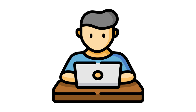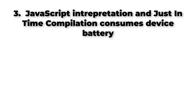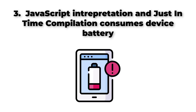If this is not bad enough, the third limitation states that JavaScript interpretation and just-in-time compilation consumes CPU and hence device battery. With the growth in mobile users and people accessing websites on their mobile devices, it's bad user experience if their device batteries are drained often.